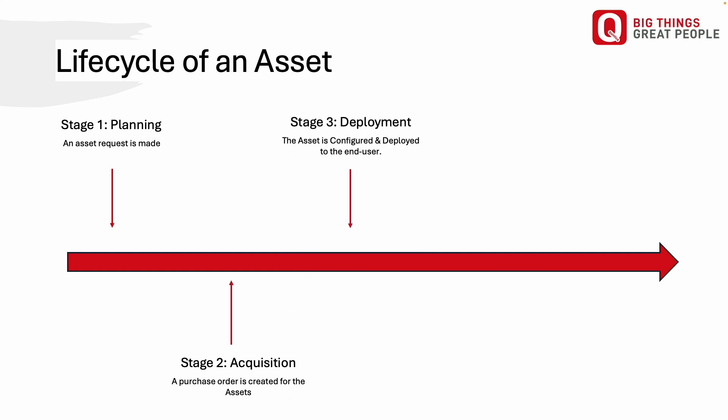The third stage is the deployment stage. At this stage, newly purchased or existing assets are deployed into operation, often initiated via a service request from an end user. For example, since the desktop was requested for a new employee, it is configured by the IT department and then given to the end user.